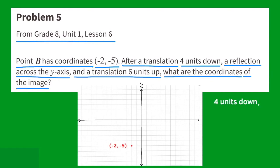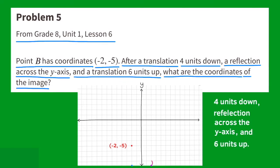I drew an x and y-axis and drew the point at negative 2 and negative 5. First, I go 4 units down. Then I make a reflection across the y-axis, drawing a new point across. And finally, I make a translation 6 units up. The coordinates of the final point are 2 and negative 3.